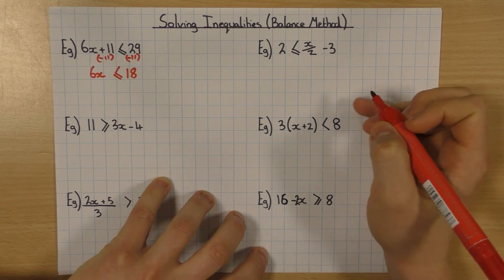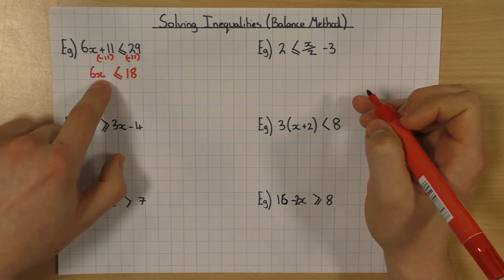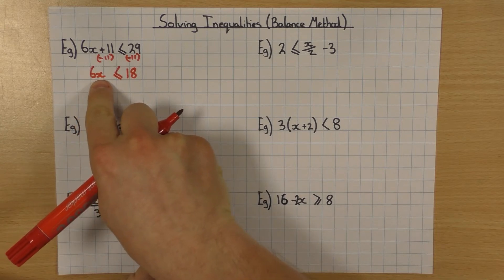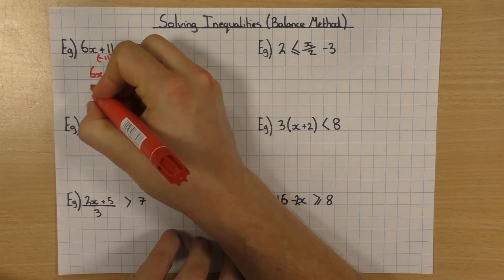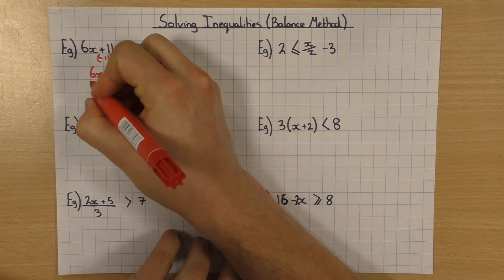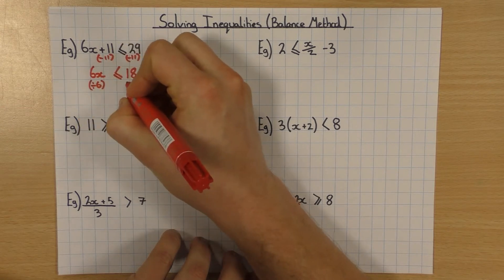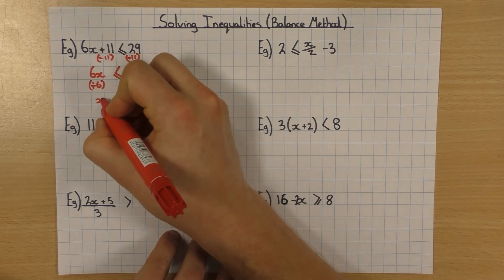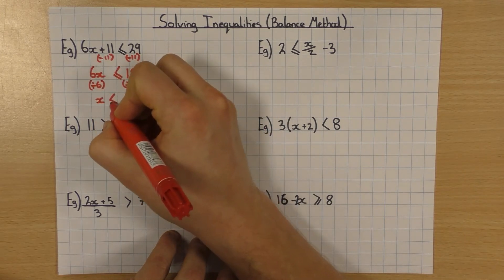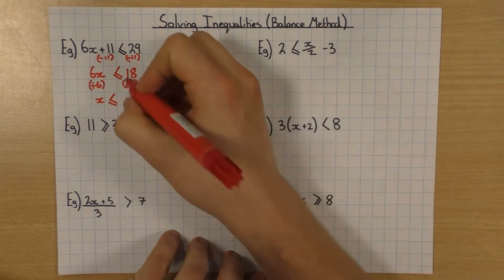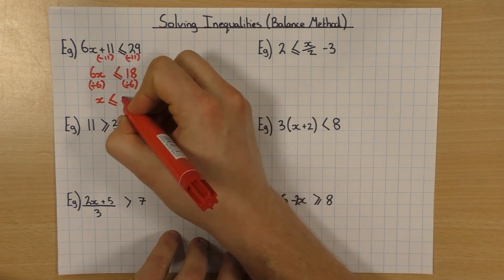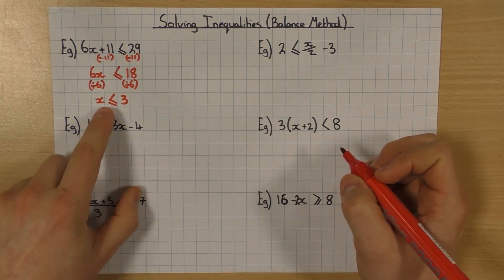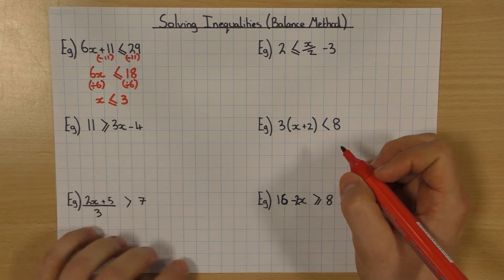So that's the first step and as I said I want to get x on its own. At the minute it's 6x which means 6 times x, so I do the opposite — I divide both sides by 6. Obviously 6x divided by 6 gives me x. My inequality sign stays the same and 18 divided by 6 is obviously 3. And there we go, we've solved the inequality: x is less than or equal to 3.